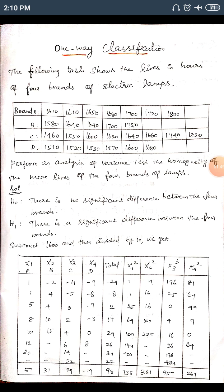After the transformation, brand A (row 1) has values: 1, 1, 5, 8, 10, 12, 20. Brand B has five data points: -2, 4, 4, 10, 15. Brand C has eight data points, and brand D has six data points. We set up the table with columns X1, X2, X3, X4 for brands A, B, C, D respectively.